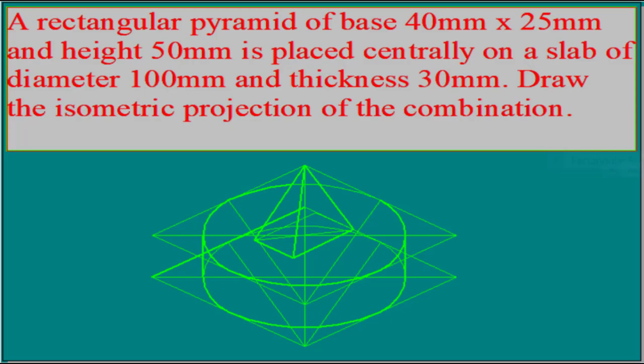Hi everyone. In this video I will explain the isometric projection of a rectangular pyramid of base 40 mm by 25 mm and height 50 mm, resting on a cylindrical slab of diameter 100 mm and thickness 30 mm.